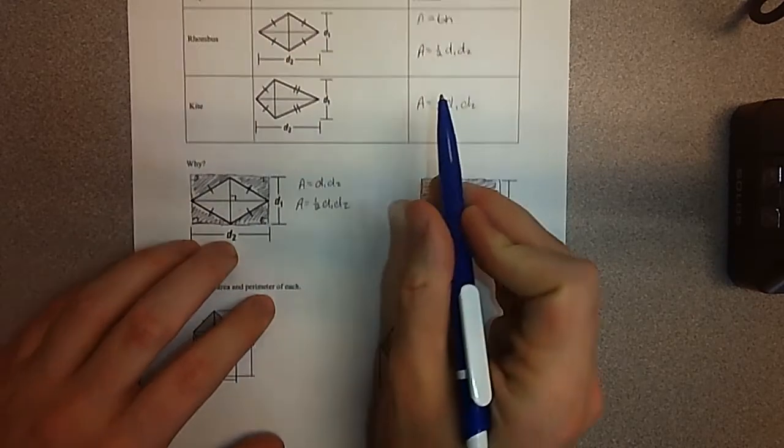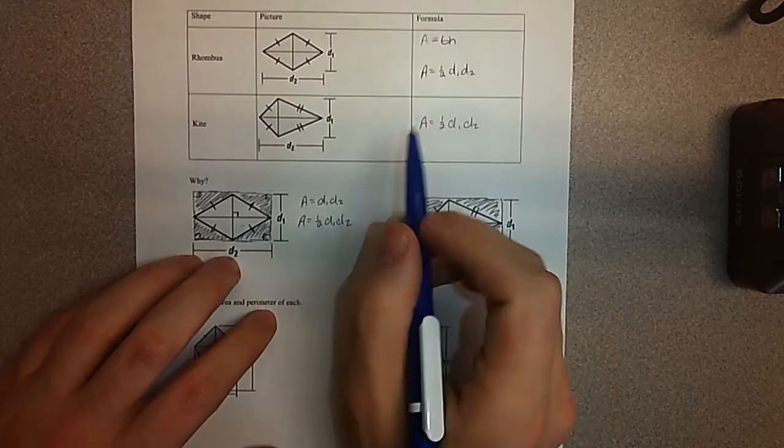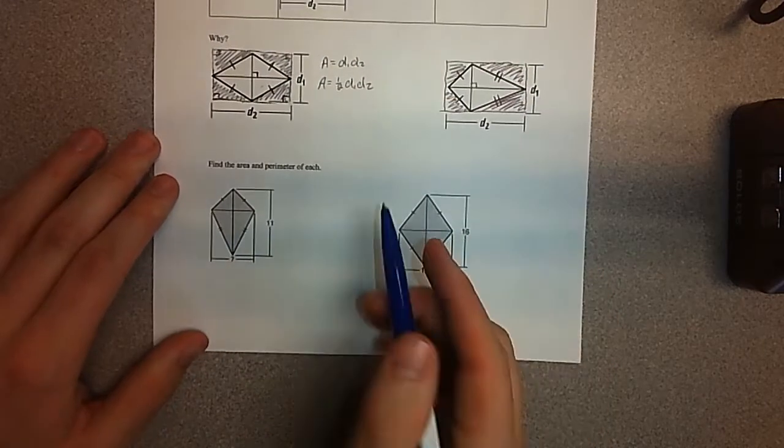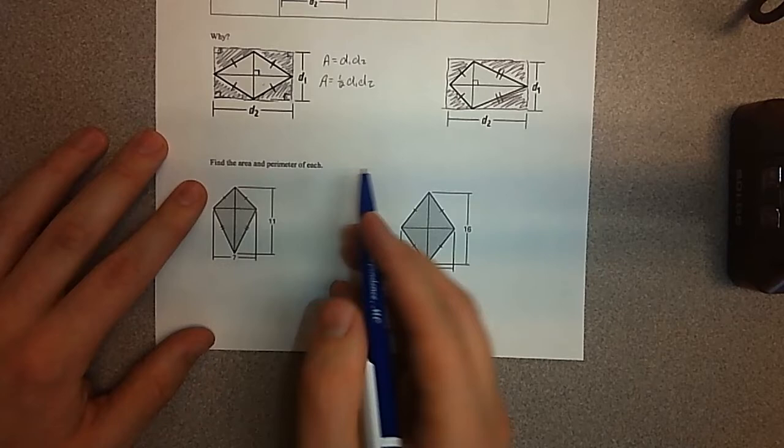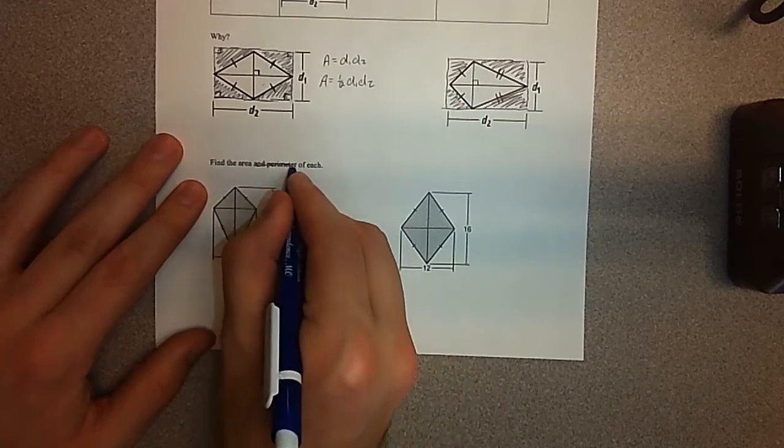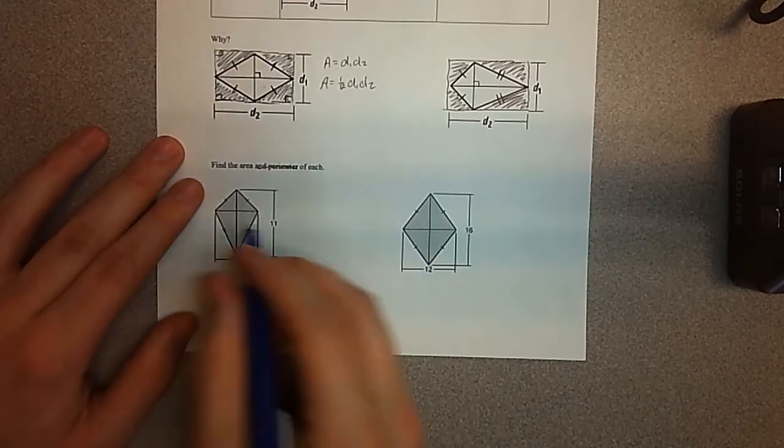So now that we kind of know why and what these formulas are, let's try to put them to use real quick. So right here, find the area and perimeter of each, and I'm actually, today, I changed my mind. I just want you guys to do the area. So this right here is a kite.